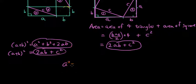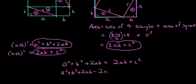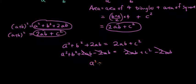So A squared plus B squared plus 2AB is equal to 2AB plus C squared. Now using a simple method of balancing equations, I can minus 2AB on both sides. 2AB minus 2AB is zero on both sides, so I am left with A squared plus B squared equals C squared, which is the Pythagoras theorem.